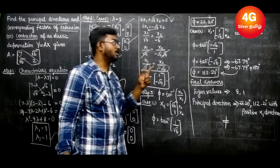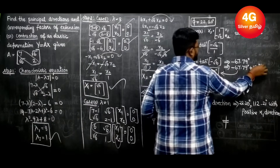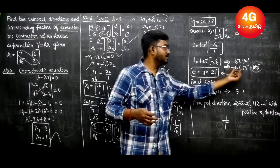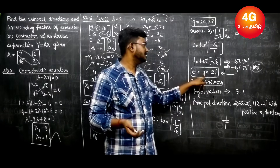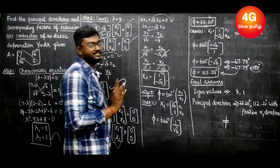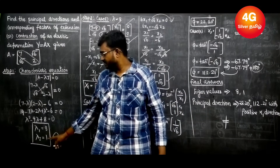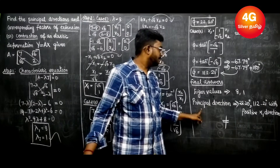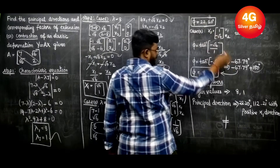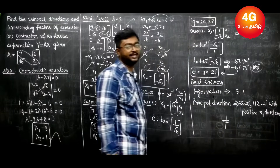Adding 180 to −67.79 gives approximately 112.21 degrees. For Case 2 with λ = 1, the corresponding angle works out to 22.20 degrees. So the two principal direction angles are 22.20 degrees and 112.21 degrees with respect to the positive x1 direction.